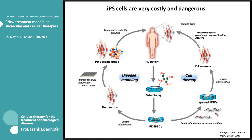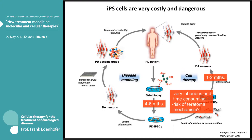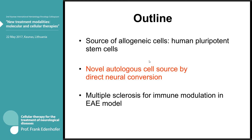Before we come to the clinical application, there is one more consideration regarding a limitation of this system. The production of iPS cells and also their maintenance and quality control is quite laborious and costly. About six months is the duration needed for iPS cell production, and one to two months for re-differentiation into the target cell type — meaning it is very time-consuming, laborious, and costly. There is also a risk of teratoma formation because iPS cells can give rise to teratomas. Therefore, we asked ourselves how to modify the reprogramming to achieve a defined proliferating intermediate, leading to the next part of the presentation.